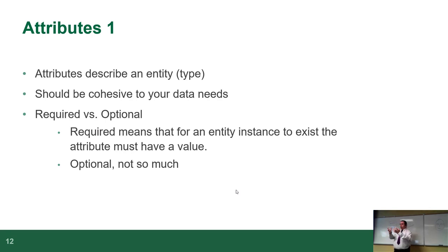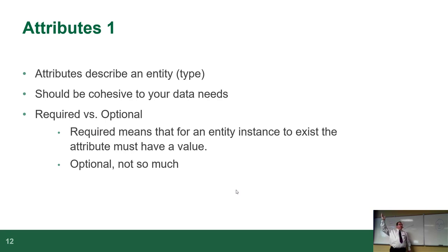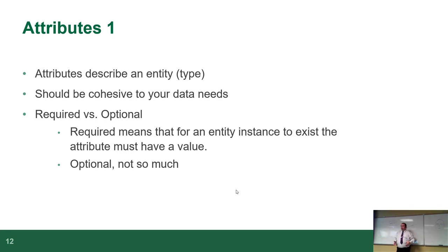An attribute is used to describe an entity. Going back to us as humans — what are some attributes we could apply to humans? Usually the first one I use is biological sex: male, female, plus miscellaneous. After that you can choose other attributes: name, date of birth, address, phone number, for example. At the most basic level you've got sex, height, weight, number of limbs, eye color.